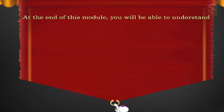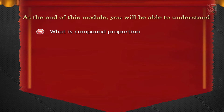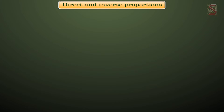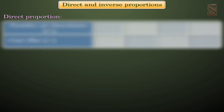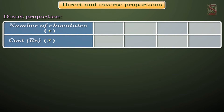You will be able to understand what is compound proportion. Let us recall about the terms direct and inverse proportions. If x and y are two quantities such that both of them increase or decrease together and x by y remains constant, then we say that x and y are in direct proportion.